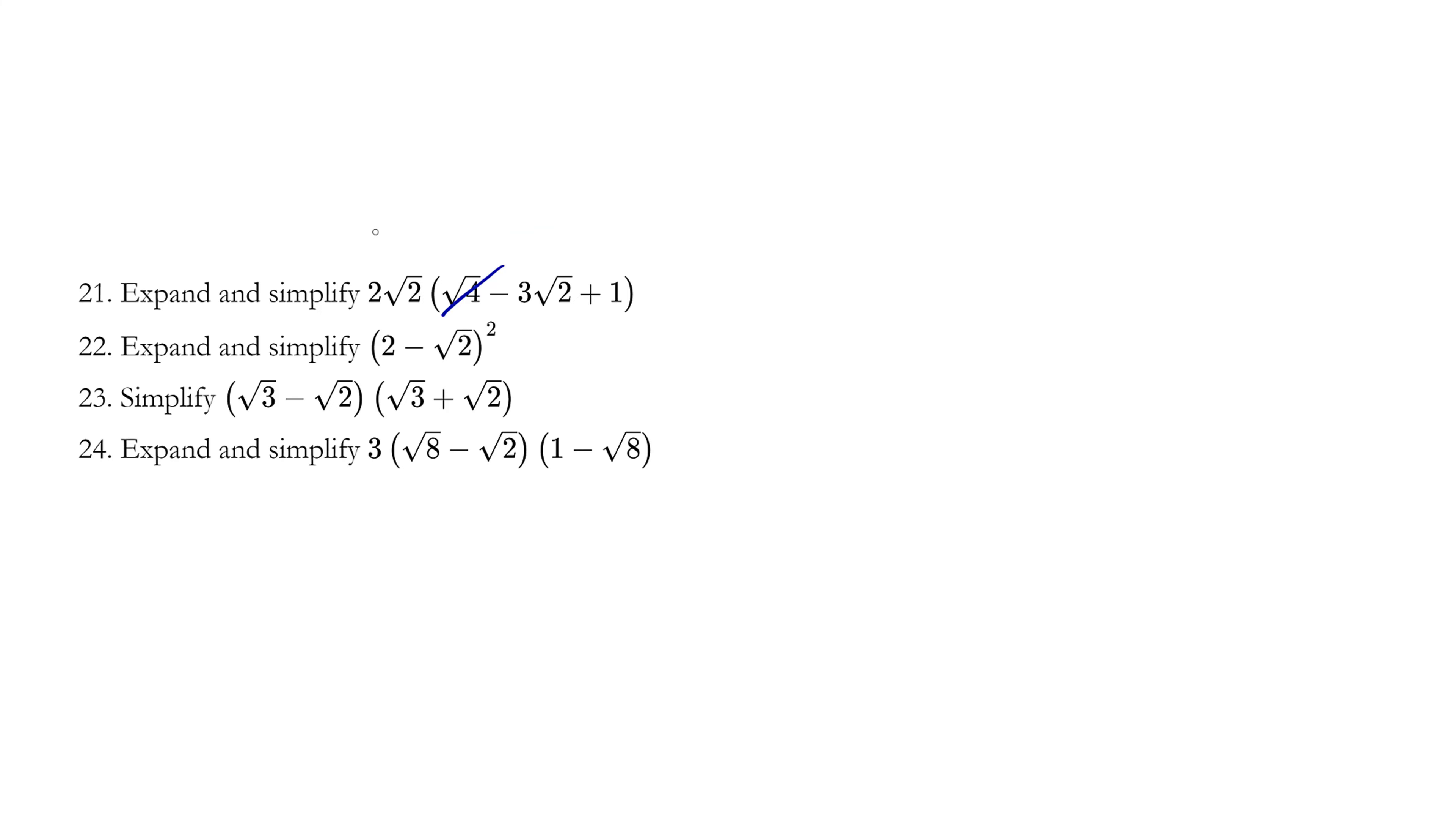So we'll try the second way. This question is equivalent to 2 root 2 bracket 3 minus 3 root 2. Now we only need to distribute. The answer is 2 root 2 times 3 is 6 root 2, and 2 root 2 times negative 3 root 2 - 2 times 3 is 6, root 2 times root 2 is simply 2.